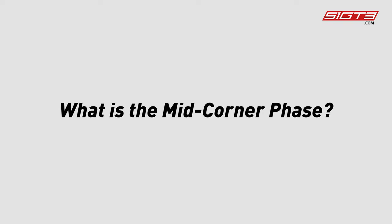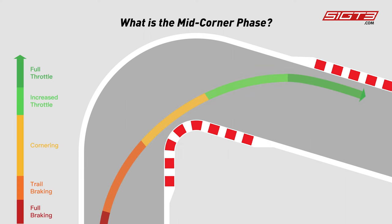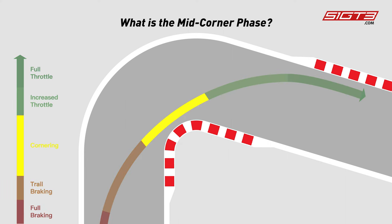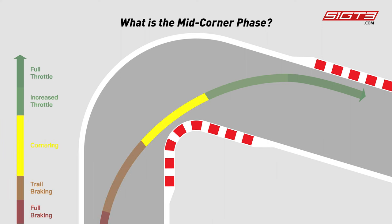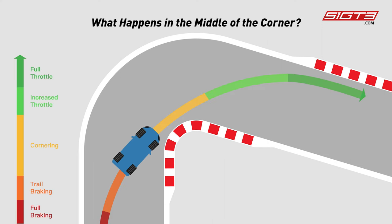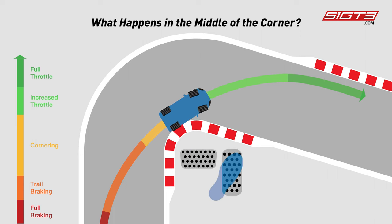Let's explain what is the mid-corner phase. Generally speaking, when a car turns a corner, the following five operations are required: full braking, trail braking, cornering, increased throttle, and full throttle. The mid-corner phase is when the car completes full braking and trail braking and fully decelerates into a cornering stage. When the car enters the mid-corner phase, the lateral forces experienced are at their maximum. The driver needs to switch from the brakes to the accelerator, ready to accelerate out of the corners.